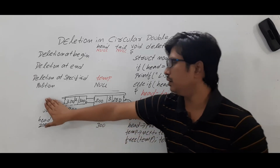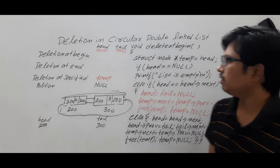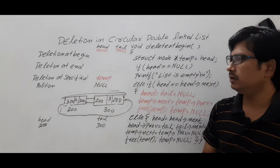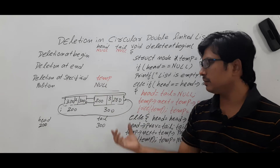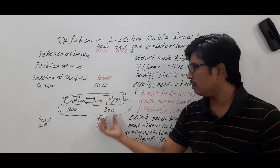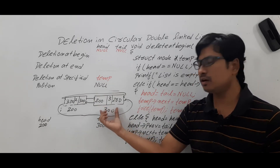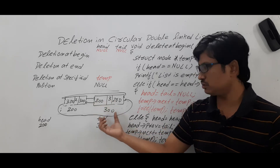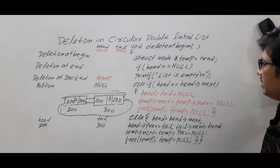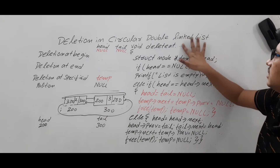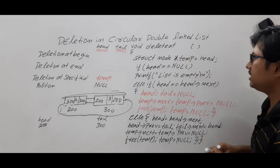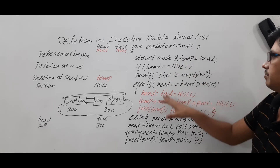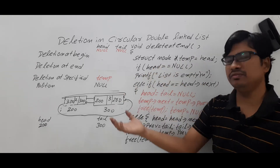Now we will discuss the next scenario — deleting a node at the end. How do you know which is the last node? The node pointed to by tail is the last node, so that is the one to release. The function name changes to delete_at_end, but the empty list and single node cases remain the same.